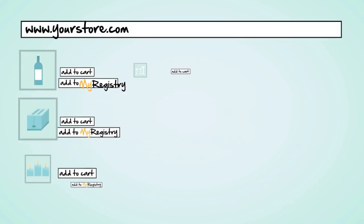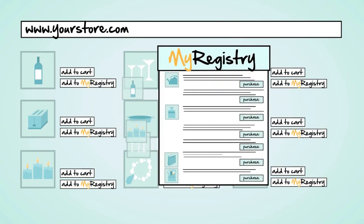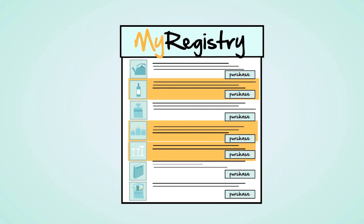You easily install a customized Add to MyRegistry button next to all your products. And every time a customer clicks the button, your product is automatically added to their gift registry on MyRegistry's universal platform.